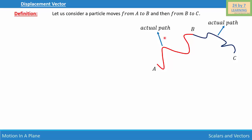To find the actual change in position, which is the displacement, I'm going to connect point A and point B. Connecting them gives this arrow, which is vector p. Similarly, connecting B and C gives vector q. So the actual displacement when the particle goes from A to B is vector p, and from B to C is vector q.